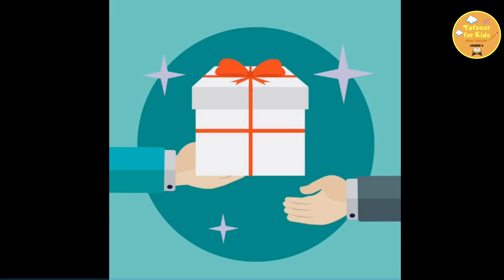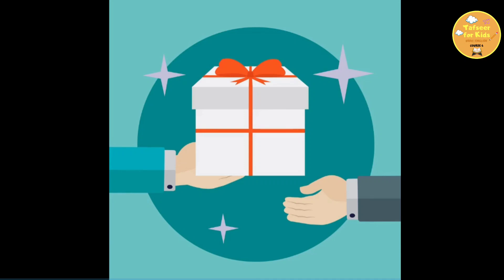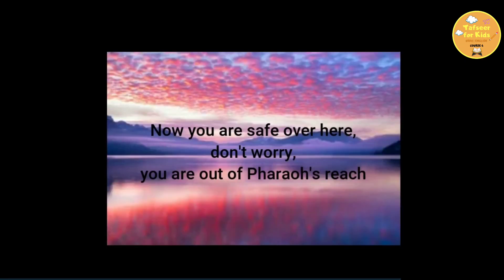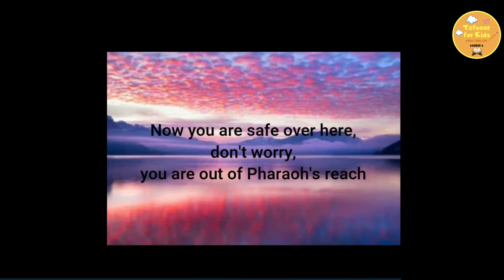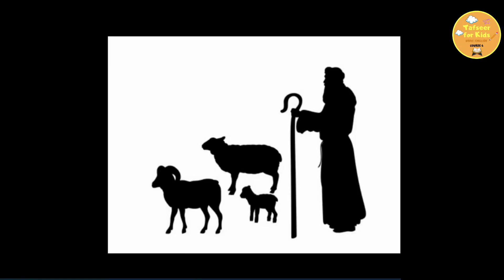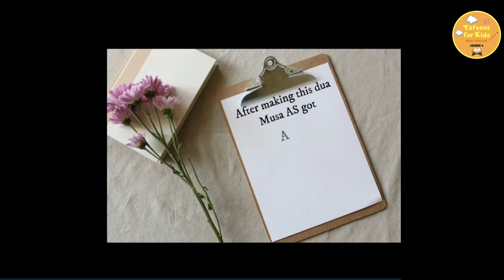The girl came back and she said, my father is saying that he wants to reward you for the service that you provided us. So, come with me. So, he went to the house. The father talked to him, asked him about his story. Musa alayhi salam told him the whole story. And the father said, now you are safe over here. Don't worry. You are out of the reach of Pharaoh. You are in another country. And he said that I am going to get one of my daughters married to you and you can stay with us for eight or ten years and you can serve me and you can take care of my animals. So, after making this dua, Musa alayhi salam got a wife, a house, a job, food, clothing, whatever he needed.